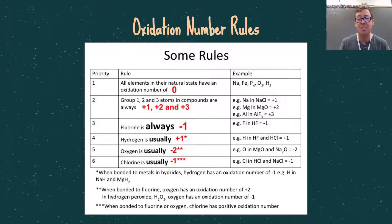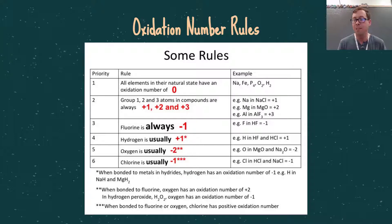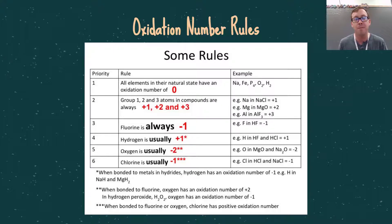Here are the rules for finding oxidation numbers: All elements in their natural state have an oxidation number of zero. Group 1, 2, and 3 compounds are always +1, +2, +3. Fluorine is always -1. Hydrogen is usually +1, but can be -1 in hydride compounds. Oxygen is usually -2, with the only real exception being a peroxide. Chlorine is usually -1 unless it starts a chemical compound. Using these rules and concepts from nomenclature, you can identify oxidation numbers of elements not explicitly listed.